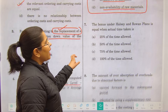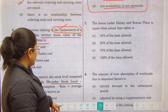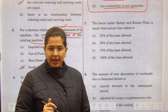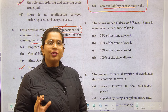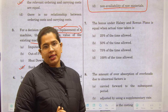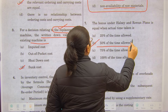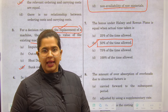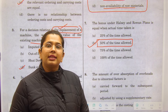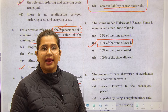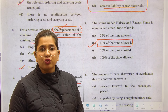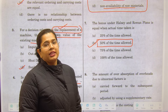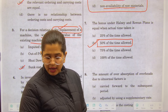The bonus under the Halse and Rowan plan is equal when the time taken is what? The Halse plan gives a 50% bonus by default. Under the Rowan plan, applying the bonus formula, it equals the Halse plan when the actual time taken is 50% of the time allowed. The Rowan plan calculates bonus on an average to disallow over-speeding. Both plans give the same result when time taken is 50% of the time allowed.